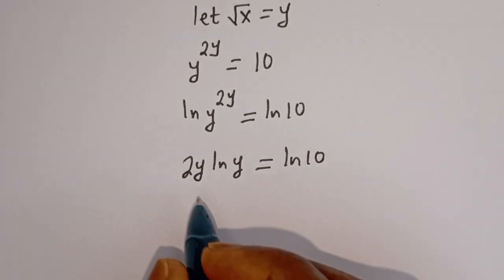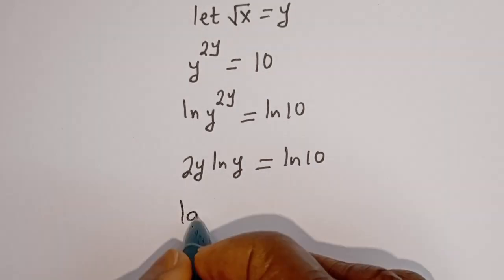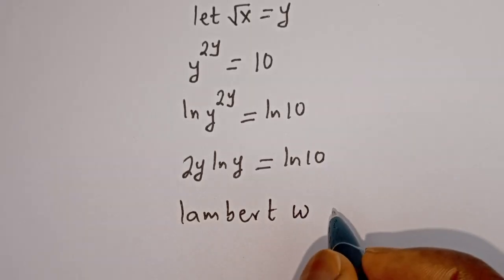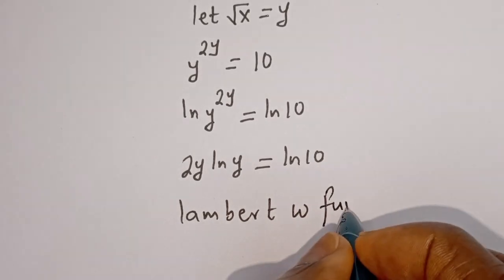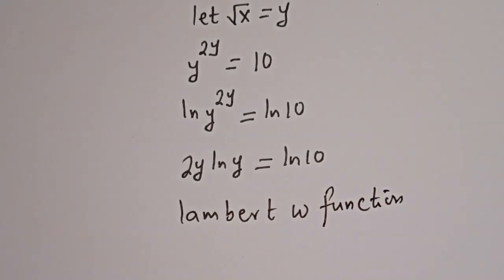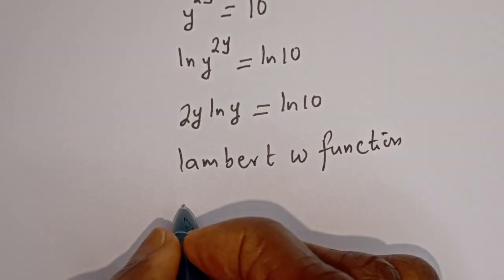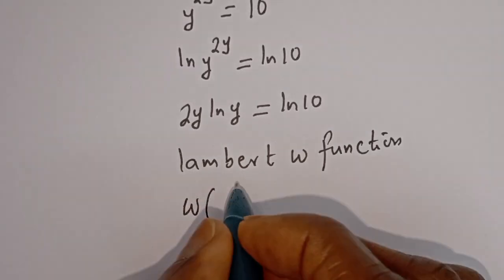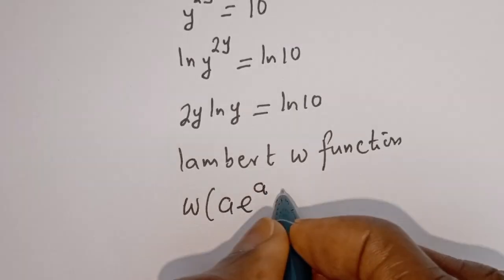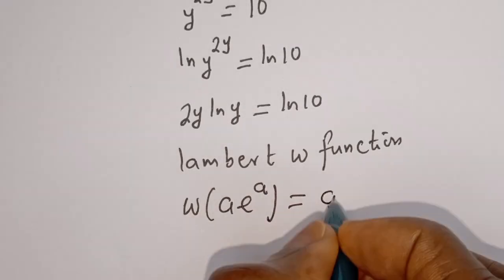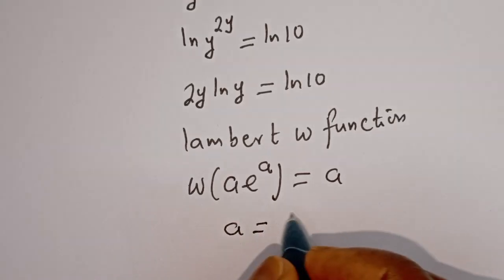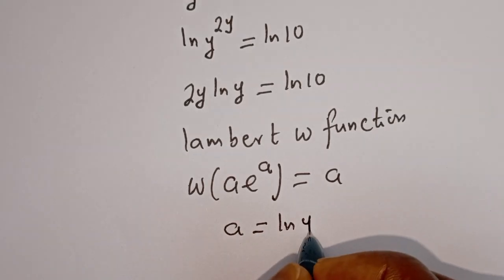Now at this point, we can apply our Lambert W function. The Lambert W function is defined as W(A·e^A) = A. In this case, we have A is equal to ln(Y).